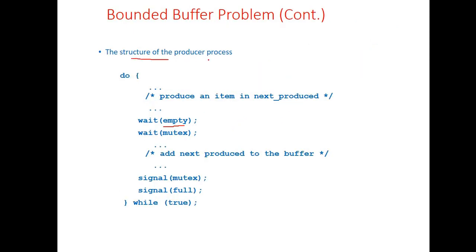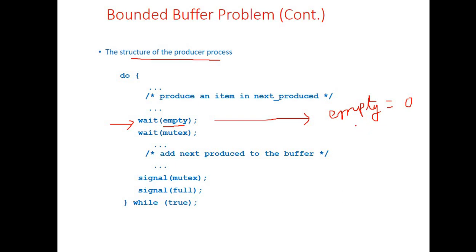The structure of the producer process is shown on screen. The producer first verifies whether at least one empty element is available in the buffer by checking the value of the empty variable. If empty is equal to 0, the wait operation on empty blocks the producer from entering into the critical section because all elements are occupied — empty equal to 0 means none of the buffer locations are free. So the producer will be blocked when empty equals 0.